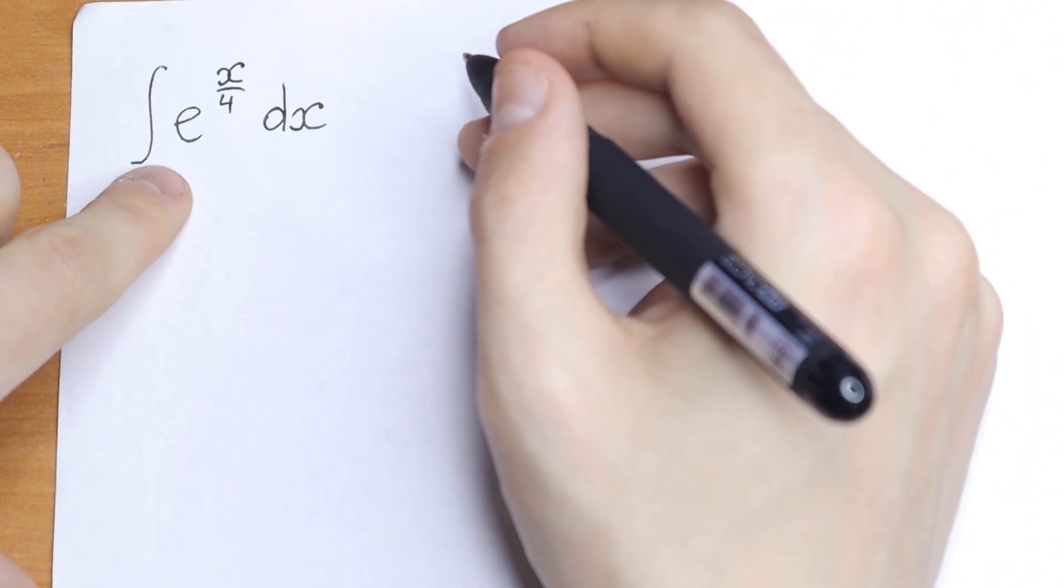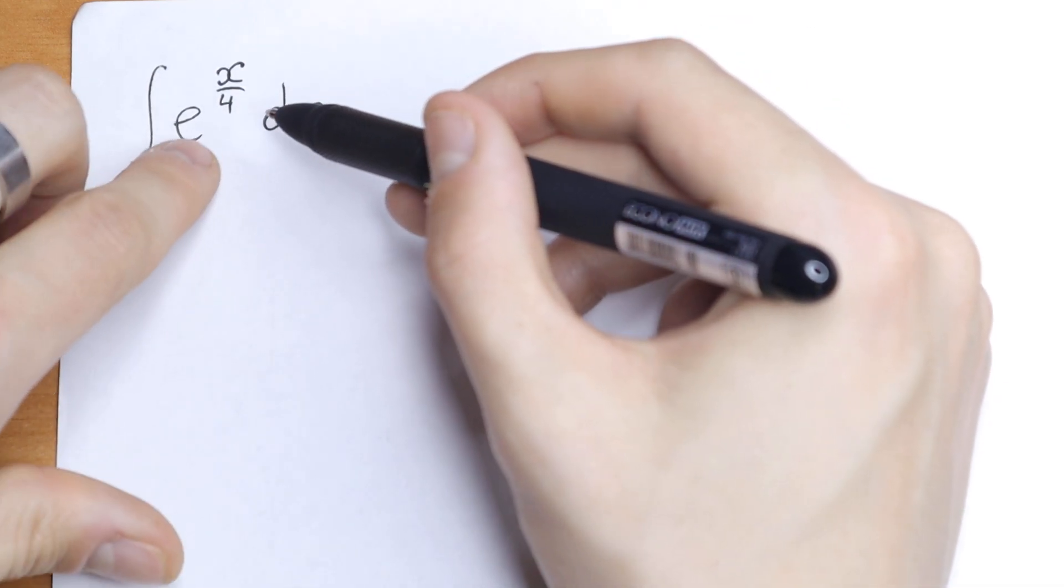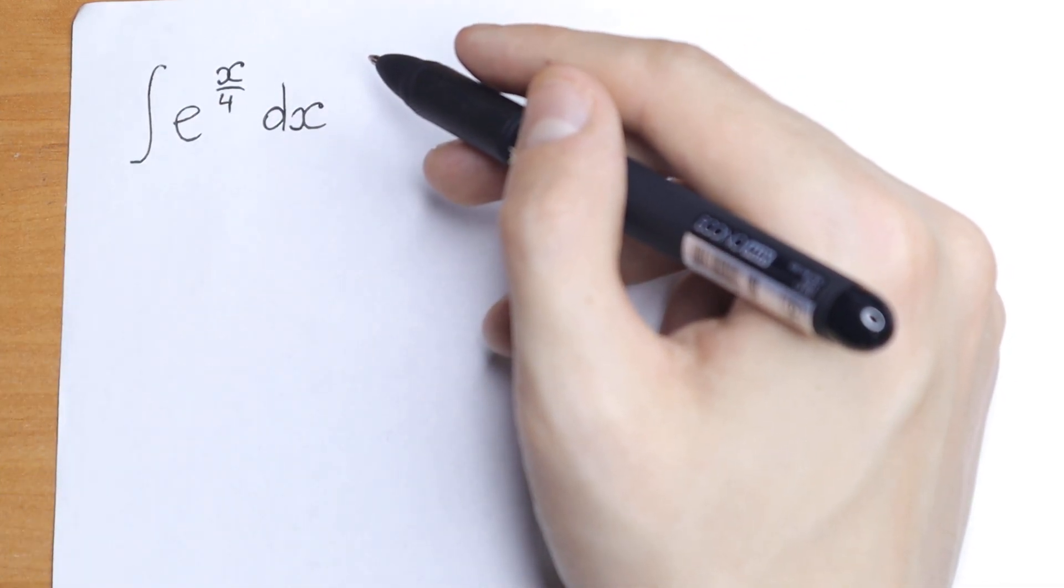This looks like our table case, but instead of the classic e to the power x, we have x over 4.